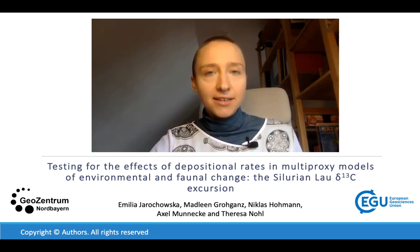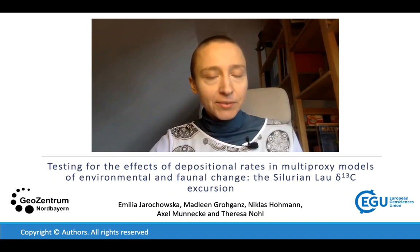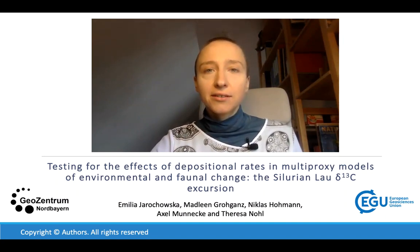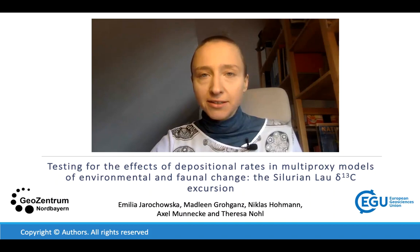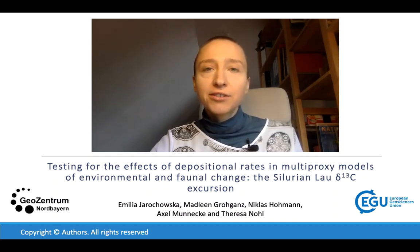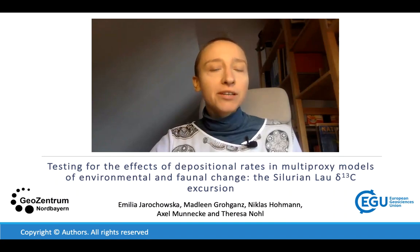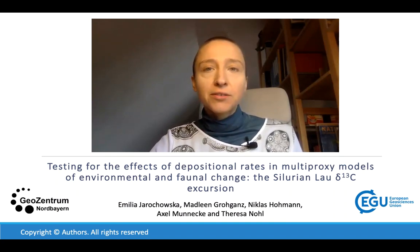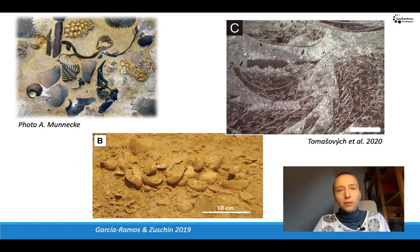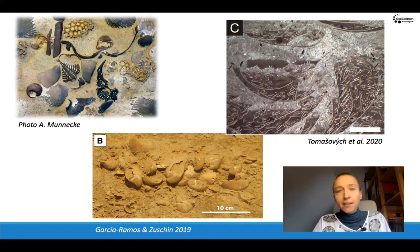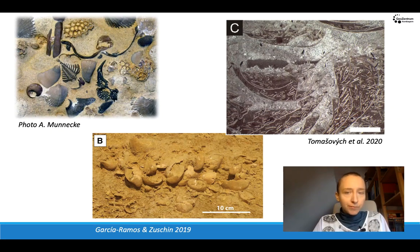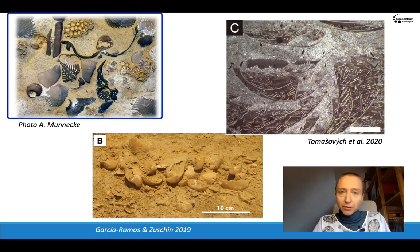We have chosen a case study in which we investigate redox proxies, that is redox sensitive elements, during a large carbon isotope excursion. But the inspiration for our approach comes from paleontological studies and particularly how paleontologists deal with time averaging. I will start by explaining the problem using fossils. Fossil assemblages are really important in reconstructing paleo environments, but that hinges on them having a high resolution so that they record a particular moment in time.